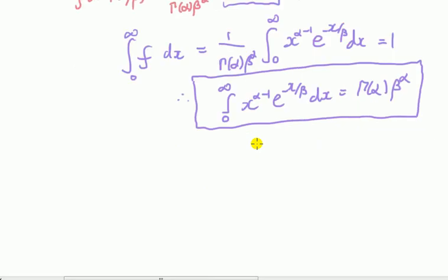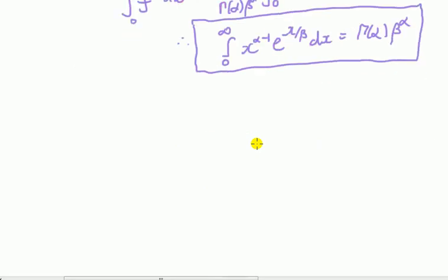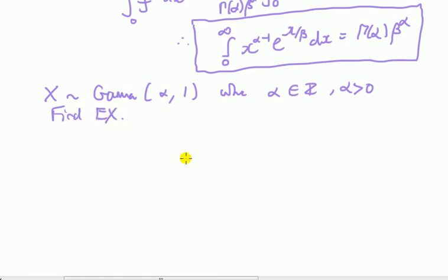So how can we use it? Well, let's say I want to find, here's a question. Say that the random variable x is a gamma, and has a parameter alpha and beta 1, where alpha is an integer value, positive integer value. And alpha is positive, let's be clear. Find the expected value of x.